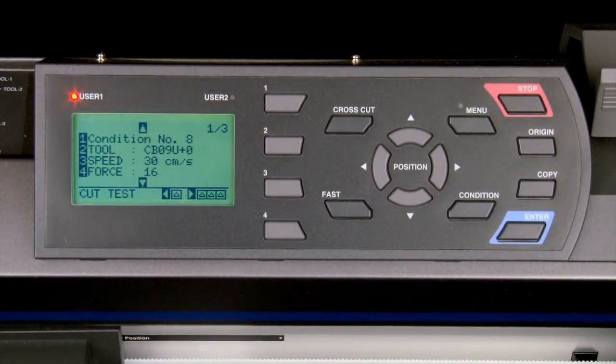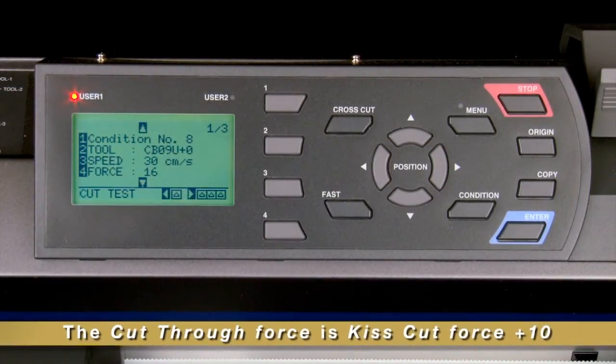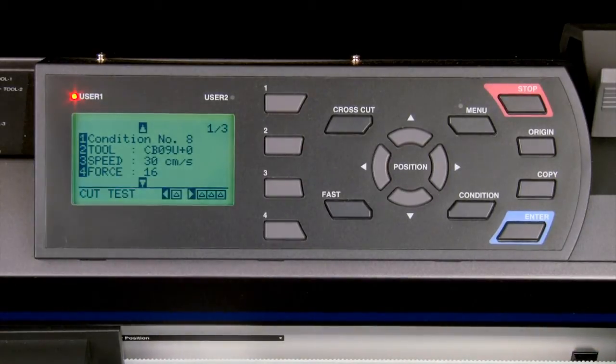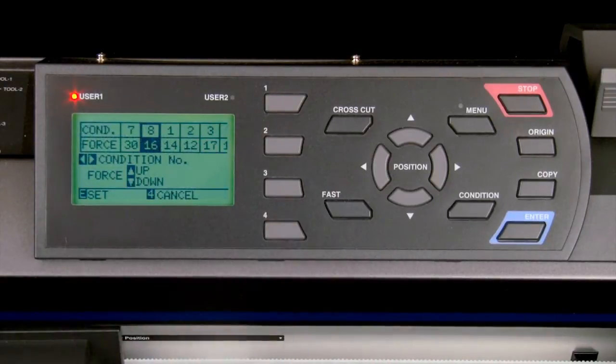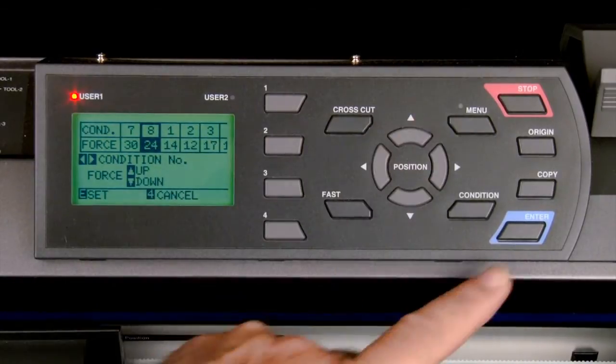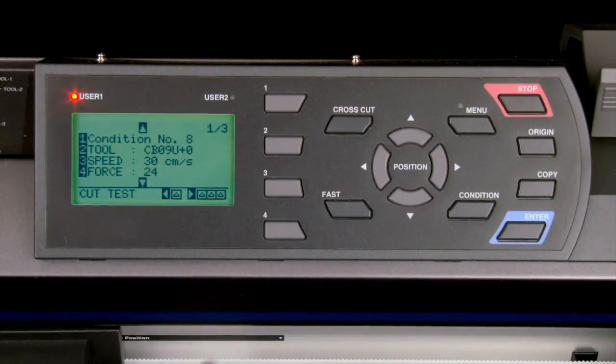As mentioned earlier, the cut through force should be set to the kiss cut force plus 10. In this case the kiss cut force was set to 14, so we'll set the cut through force to about 24. We'll set the speed to 30.